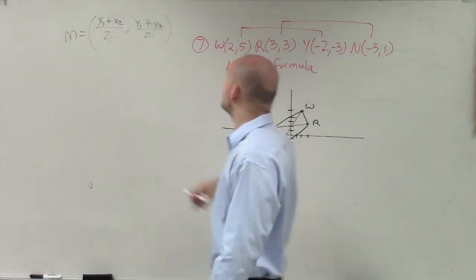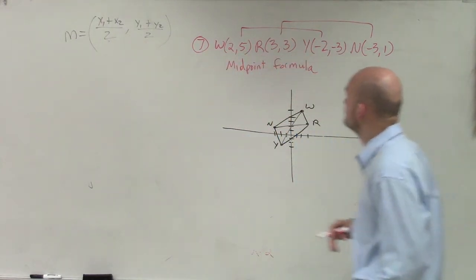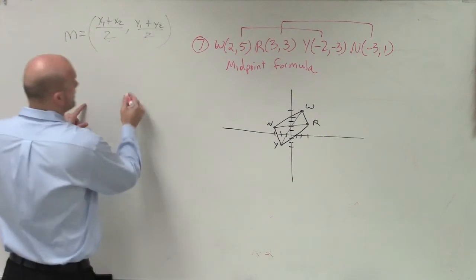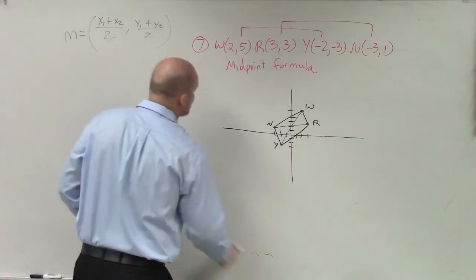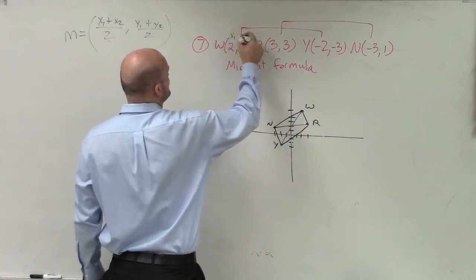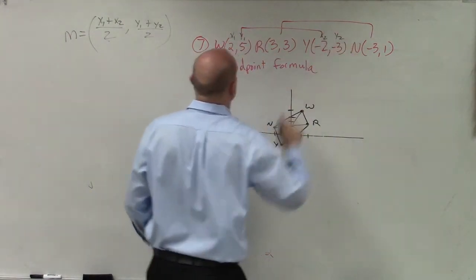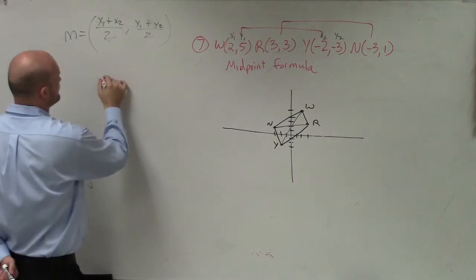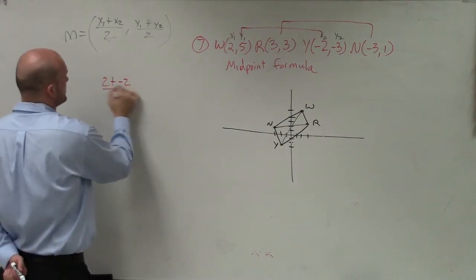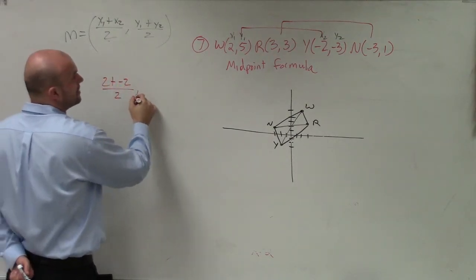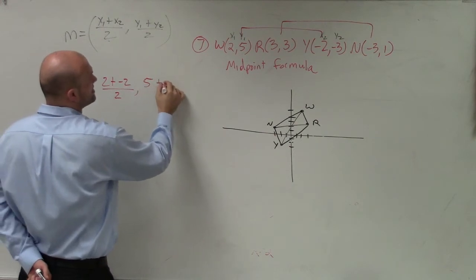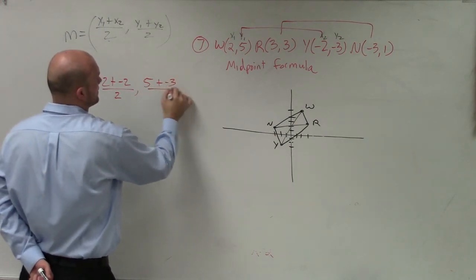So here's the midpoint formula. If I want to find the midpoint of W and Y, I'm going to have x1, so I'll label this as (x1, y1). And I'll label this as (x2, y2). So I have (2 + -2) / 2, comma, (5 + -3) / 2.